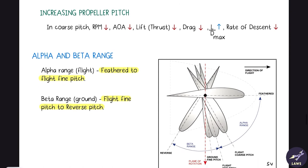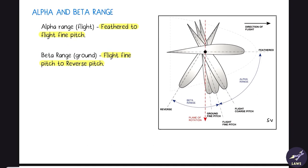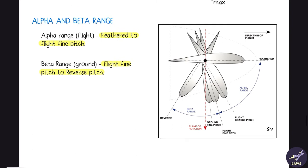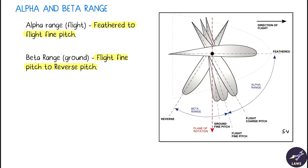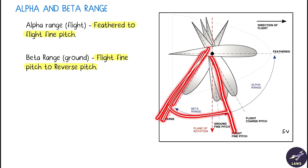The alpha range is from the fully feathered coarse pitch position to the flight fine pitch position. The beta range is between the flight fine pitch and the reverse pitch position.